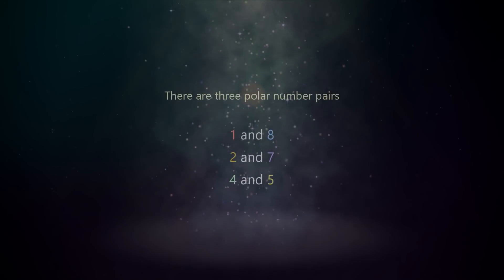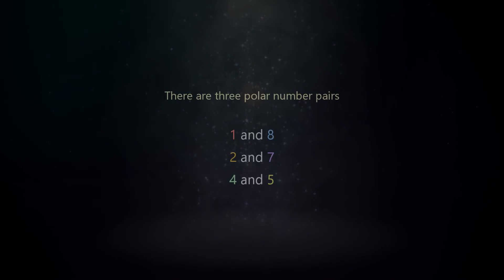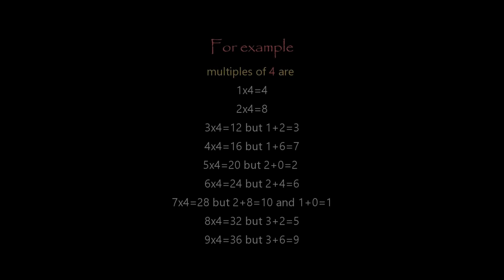There are three polar pairs: 1 and 8, 2 and 7, 4 and 5. For example, multiples of 4 are: 1 time 4 equals 4, 2 times 4 equals 8, 3 times 4 equals 12 but 1 plus 2 equals 3, 4 times 4 equals 16 but 1 plus 6 equals 7, 5 times 4 equals 20 but 2 plus 0 equals 2.